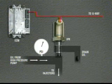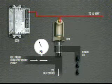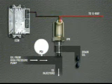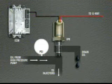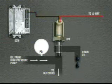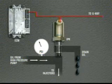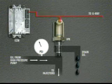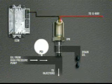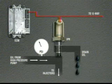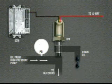When ICP demand decreases, the ECM decreases the duty cycle to the solenoid, allowing more oil to drain from the system and decreasing the injection control pressure. The system is protected by a pressure relief valve in the IPR that relieves pressure at about 4,600 PSI.